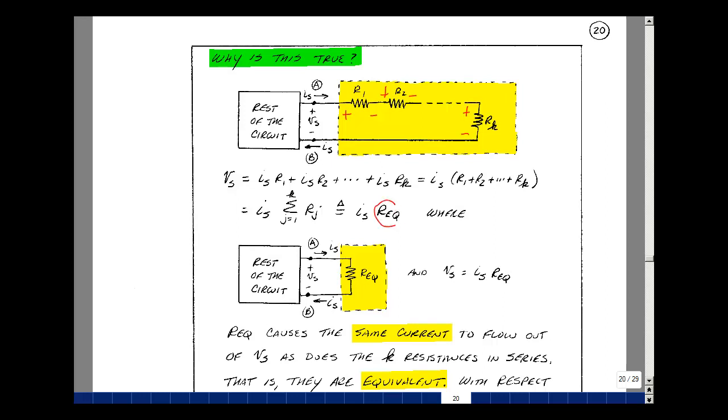Now let's call that summation R equivalent. Let's replace the yellow box with a single resistor, whose value is R equivalent. The current I sub s flows in this circuit, and the same current flows here, then the voltage V sub s is I sub s times R equivalent. And likewise,